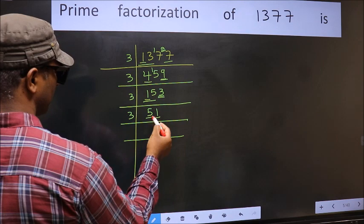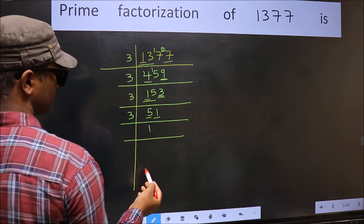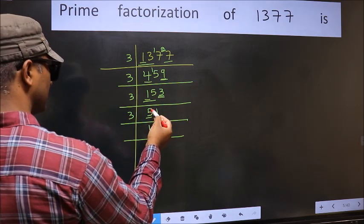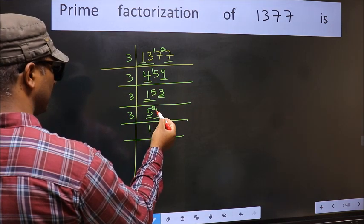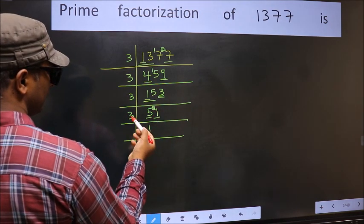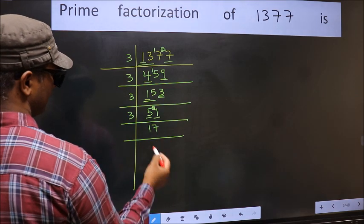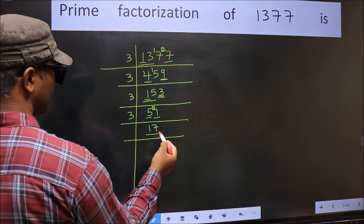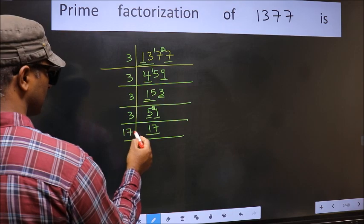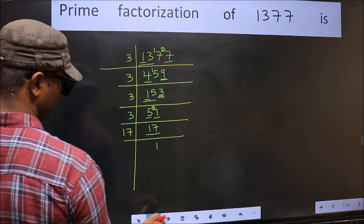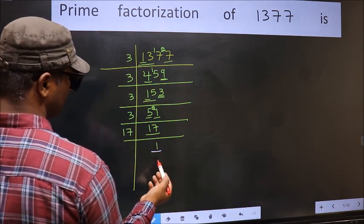First number is 5. A number close to 5 in the 3 table is 3 ones, 3. 5 minus 3 is 2; 2 carried forward gives 21. We get 21 in the 3 table as 3 sevens, 21. Now here we have 17. 17 is a prime number, so 17 ones are 17, giving us 1 here.